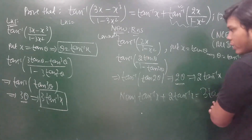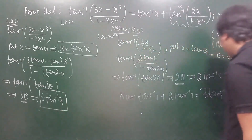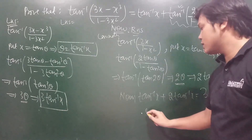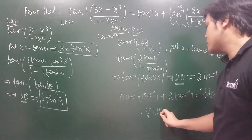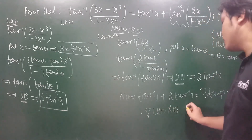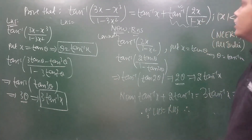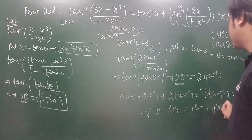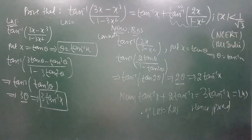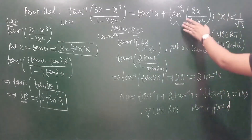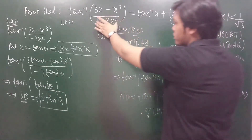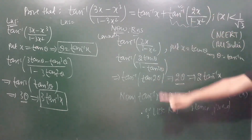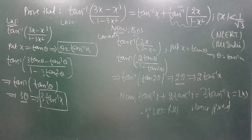Since LHS equals RHS, hence proved. We simply wrote the first term in its simplest form and the second term in its simplest form, showing that LHS equals RHS. Hence proved.